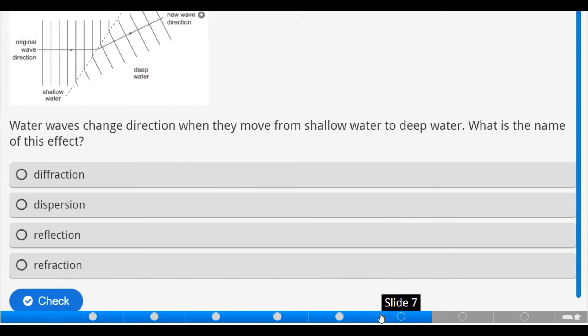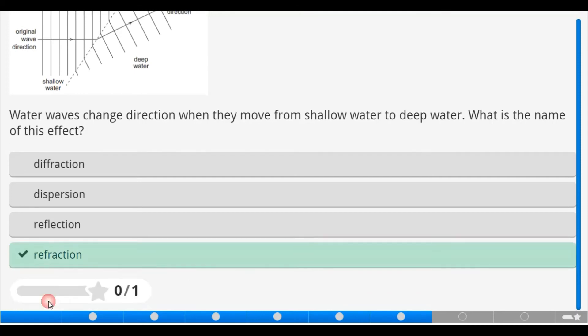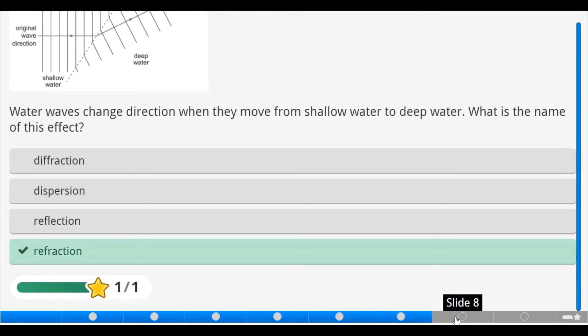Now, let's move on. Water waves change direction when they move from shallow water to deep water. What is the name of this effect? In changing direction, it also involves the change of speed. When a wave is moving from one medium to another, that has been defined previously from our last interactive notes as refraction. So, let's take it and check. That's correct.